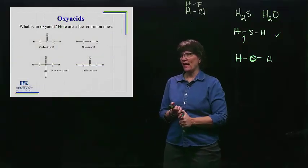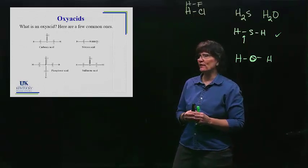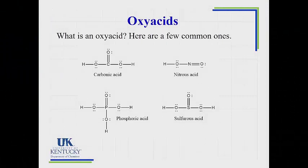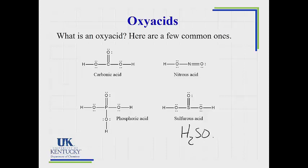Now let's look at oxy acids. On the screen are four examples. All it means is we've got a central atom, we have oxygens surrounding that central atom, and we have a hydrogen attached. That donatable hydrogen — the acidic proton — is always attached to oxygens. So when you see something written like H2SO3, you might think those hydrogens are attached to the sulfur, but they aren't. They are attached to the oxygens, as we see in this image. Almost always, all the hydrogens in an oxy acid are attached to oxygens around the central atom.